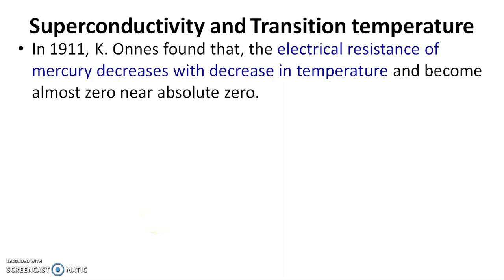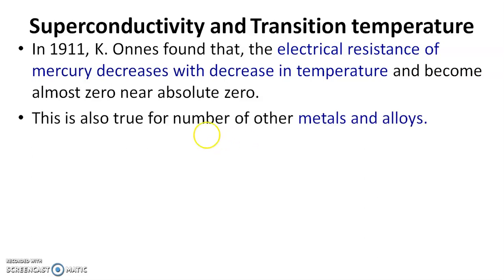In the year 1911, Kamerlingh Onnes observed that the electrical resistance of a material, especially mercury, decreases with decrease in temperature and becomes almost zero near absolute zero. It means electrical resistivity decreases with decrease in temperature, and at the same time electrical conductivity increases with decrease in temperature.